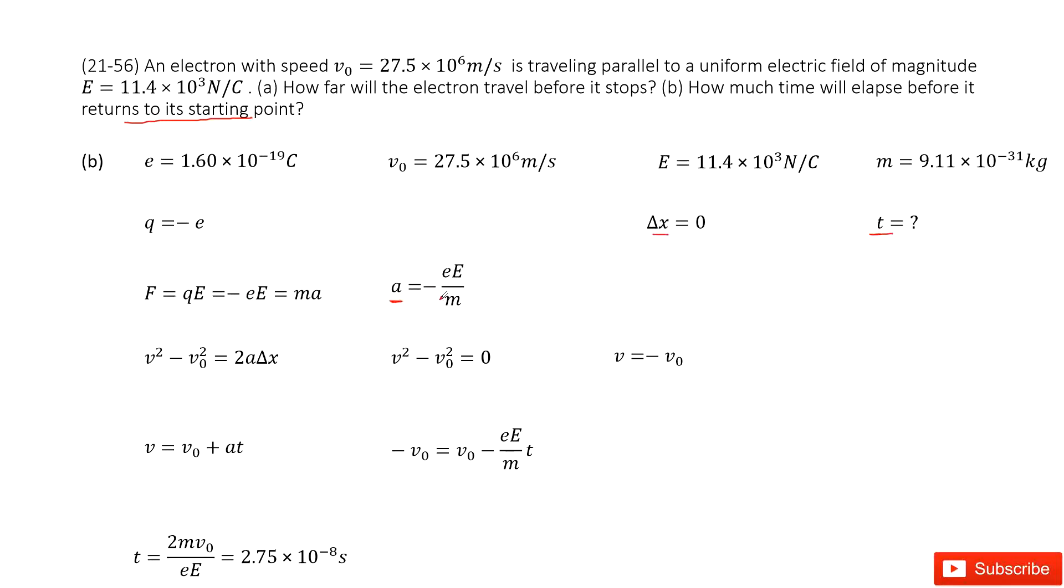And also, can you find the final speed? Yes. From this equation, you can see the delta x equals zero. Therefore, we get v equals negative v0, because it returns back to the starting point. So this v is with the opposite direction. This v is equal to initial speed but with the negative direction.